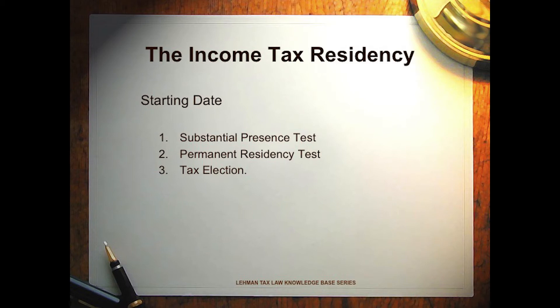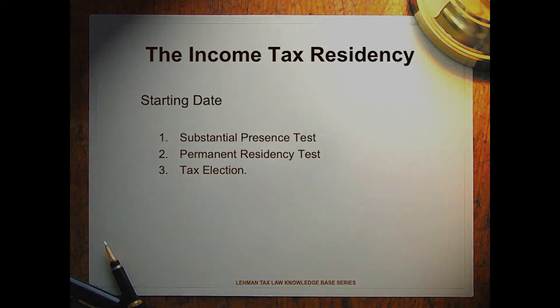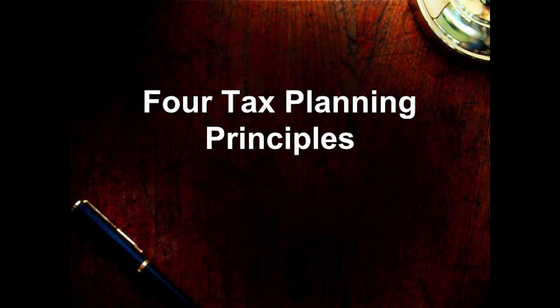Our pre-immigration tax planning focuses on a couple of different things. First, we have to understand when does a foreign national become a U.S. taxpayer? They can become U.S. taxpayers when they get a green card, which allows permanent residency — the moment you have your green card and you are on American soil, you become a U.S. taxpayer. They can also spend too much time here; if you spend more than a certain amount of time in the United States over a span of several years, you can be forced to pay taxes as a U.S. tax resident.